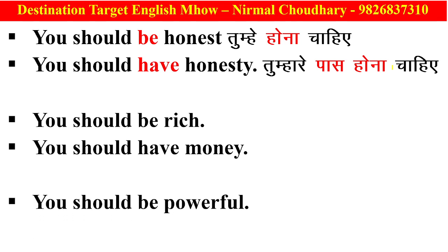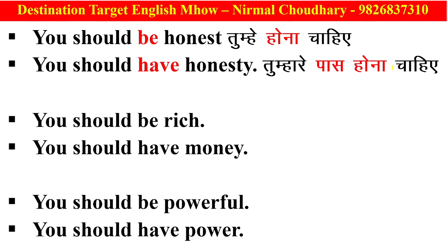One more example we can see. You should be powerful — tumhe takatavar hona chahiye. And if we say you should have power — tumhare paas power ya takat honi chahiye. After 'be', what we have used here is an adjective — a word that describes the quality of a person: whether they are good, bad, or how they are. What describes a person's quality, we call that an adjective.